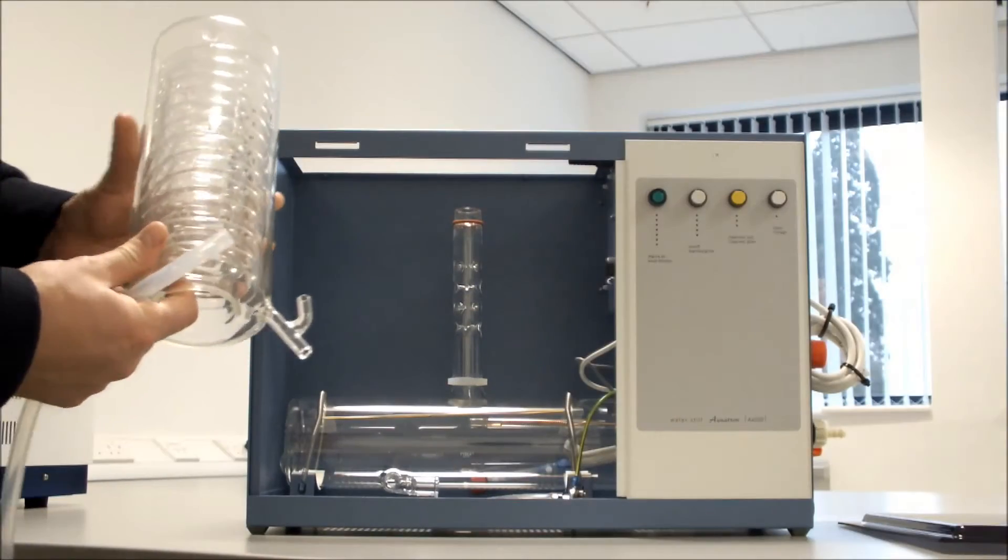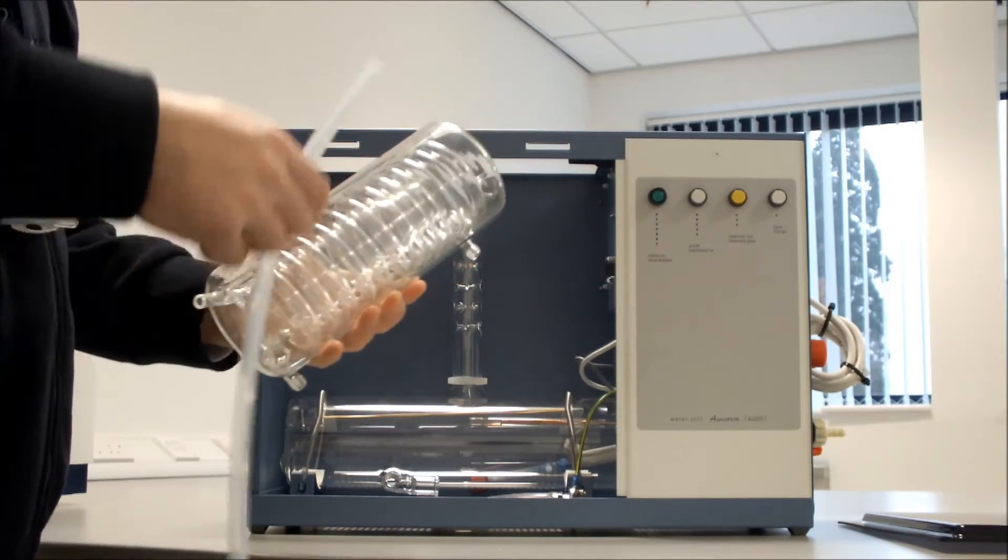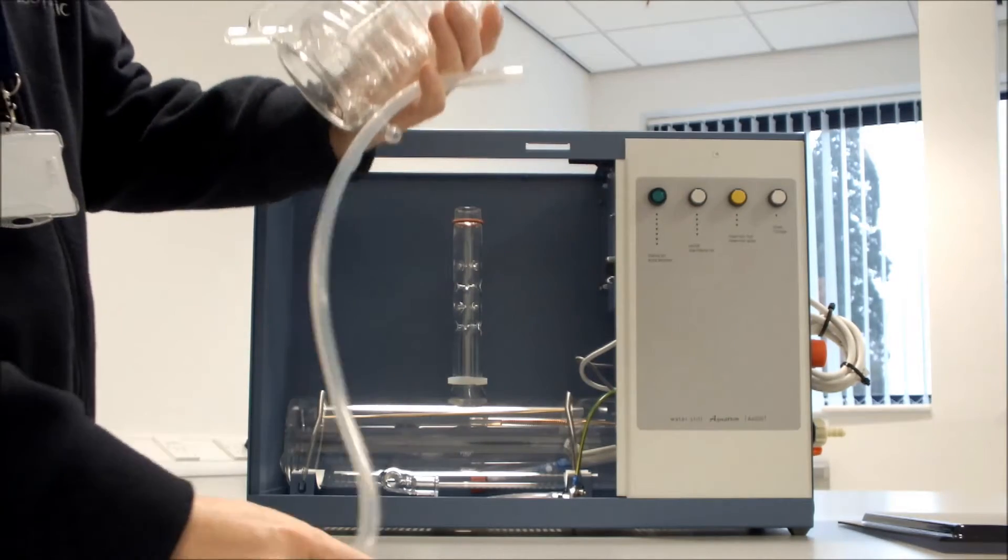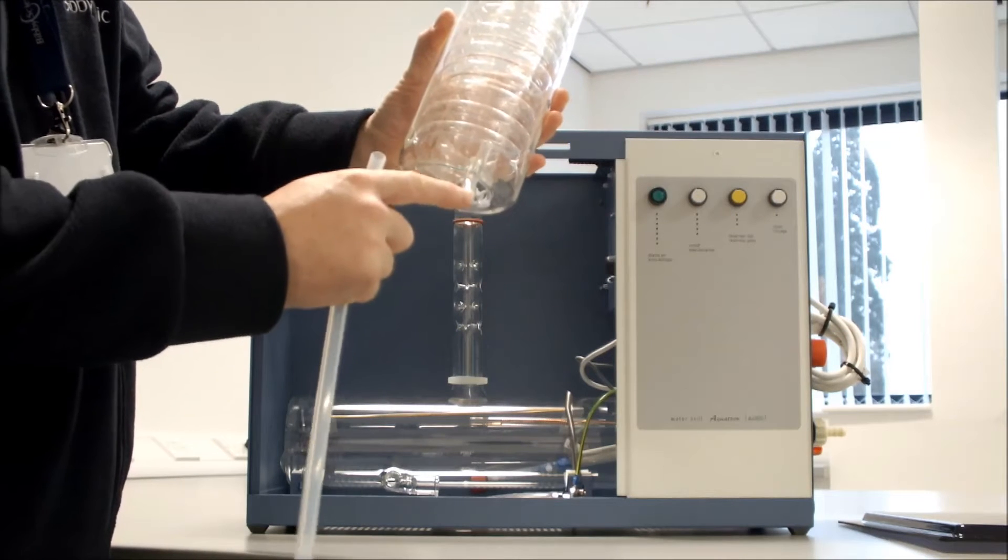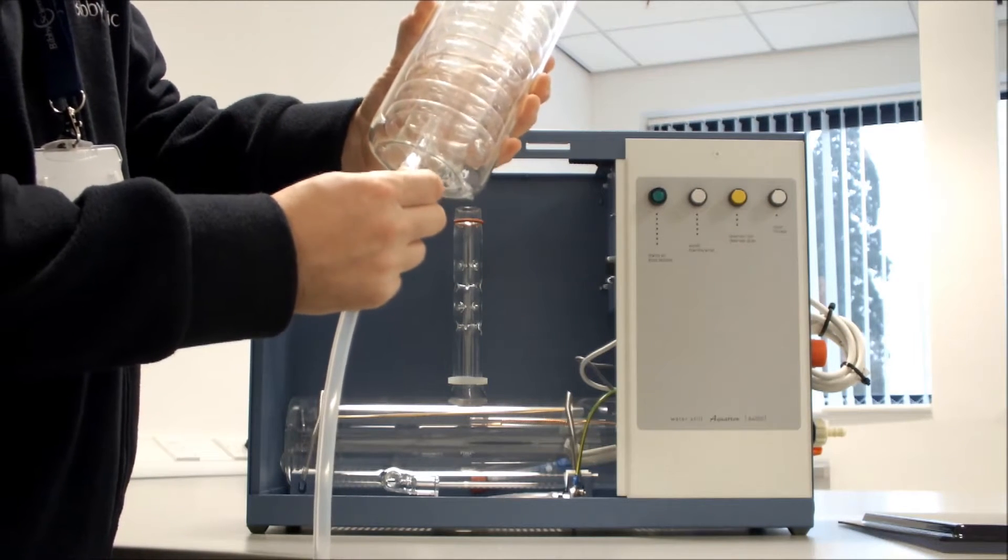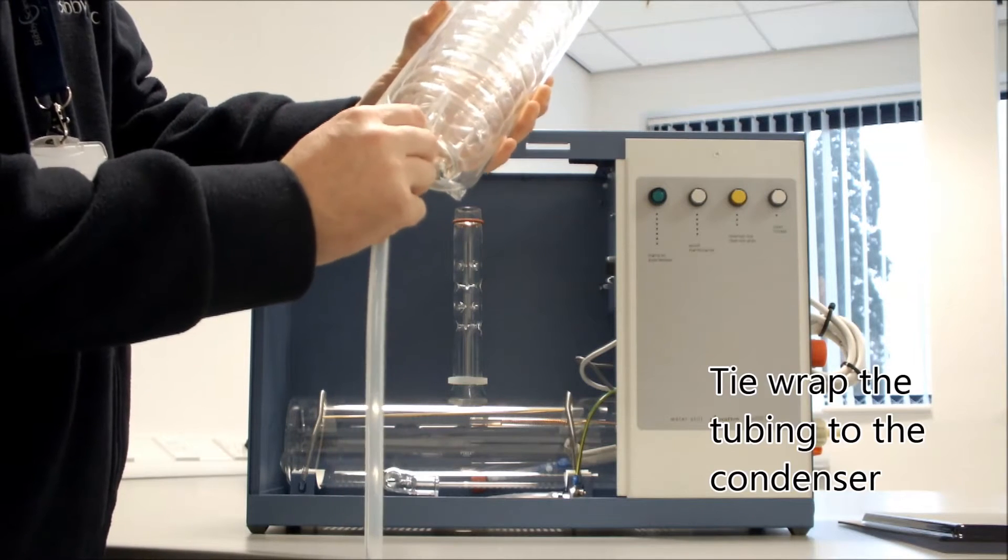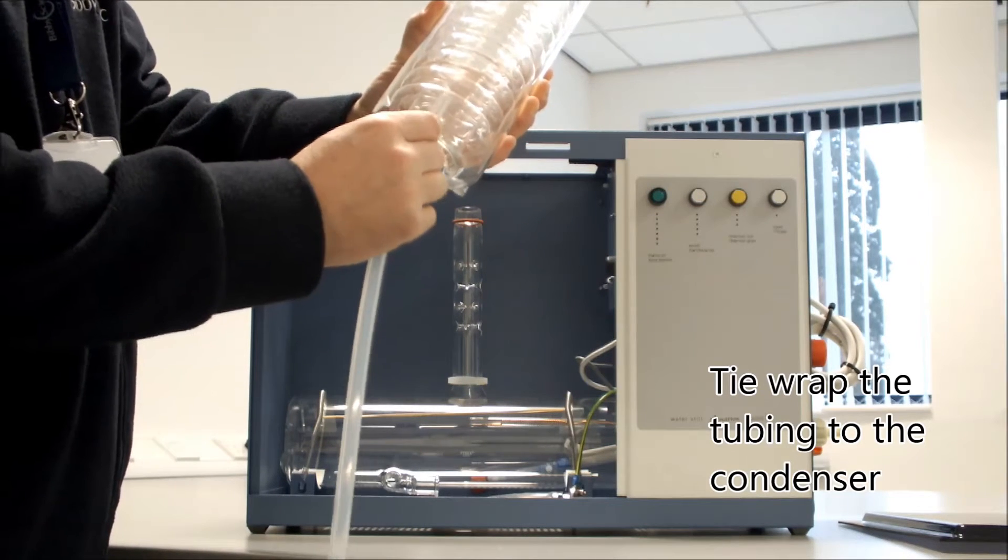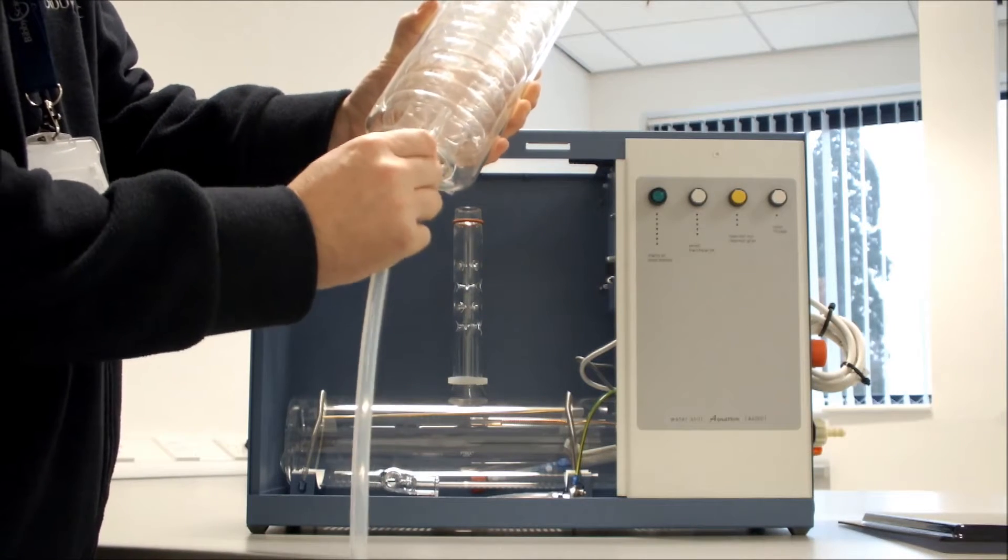The next thing to do is to fit the condenser itself. What we need to do is take our one meter of 8mm hose and connect that to the bottom connection of the condenser. This is where the distillate will actually leave the condenser. The tubing is just pushed onto the bottom connector.